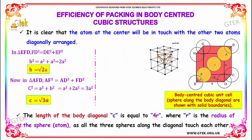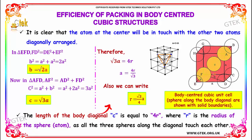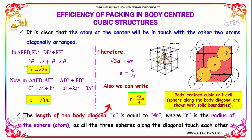Now let's move on to the packing in body-centered cubic structure. It is clear that the atom at the center will be in touch with the other two atoms diagonally arranged. In triangle EFD, you get FD² = DE² + EF², so B² = 2A².